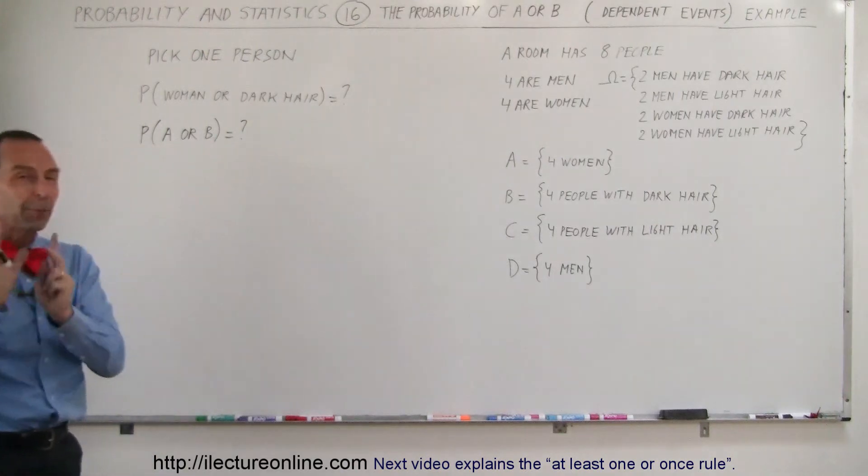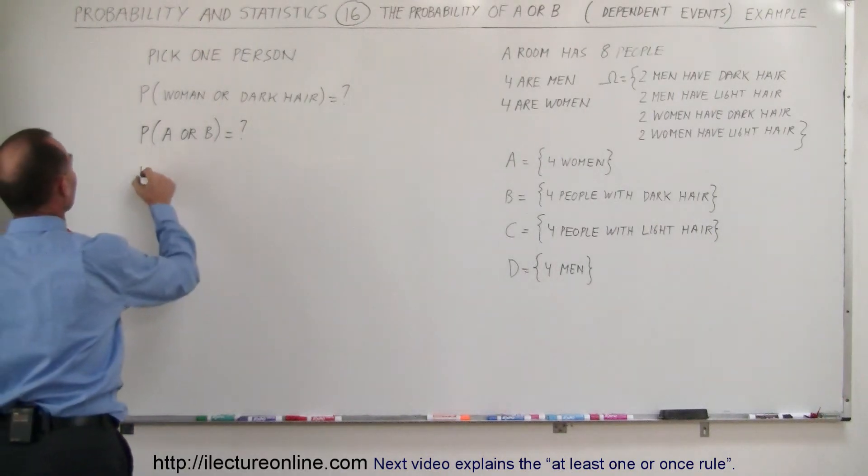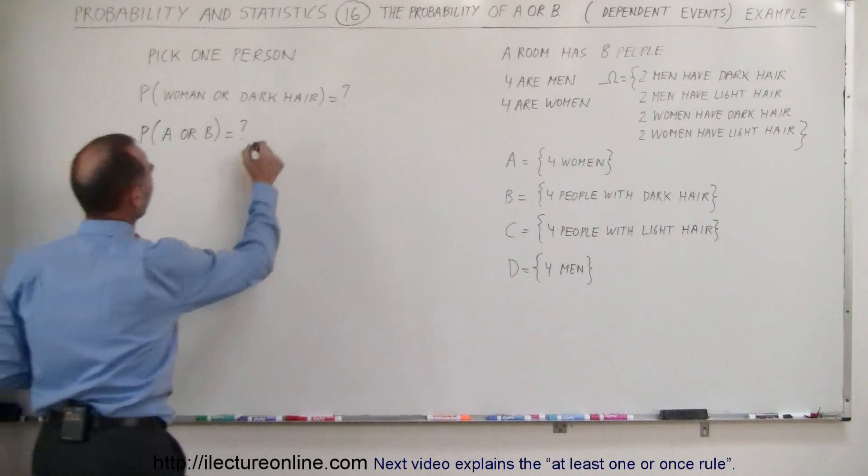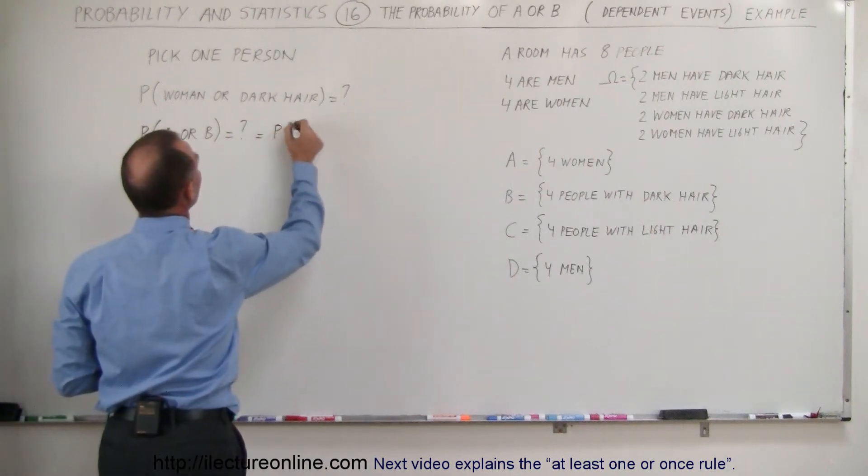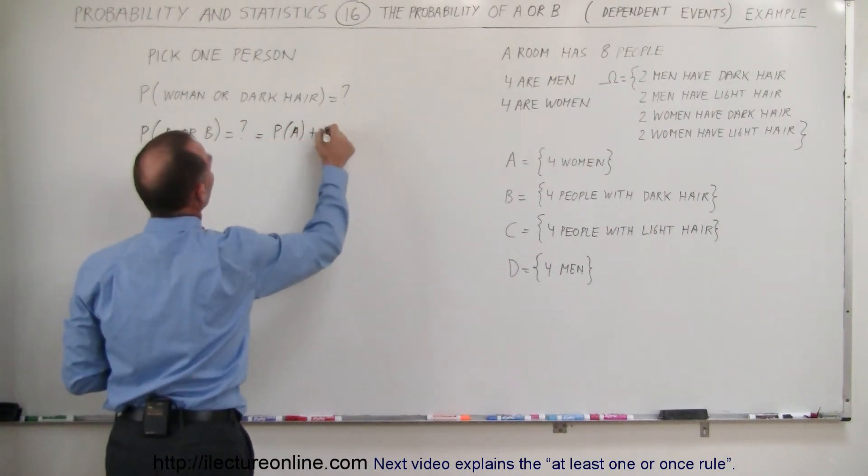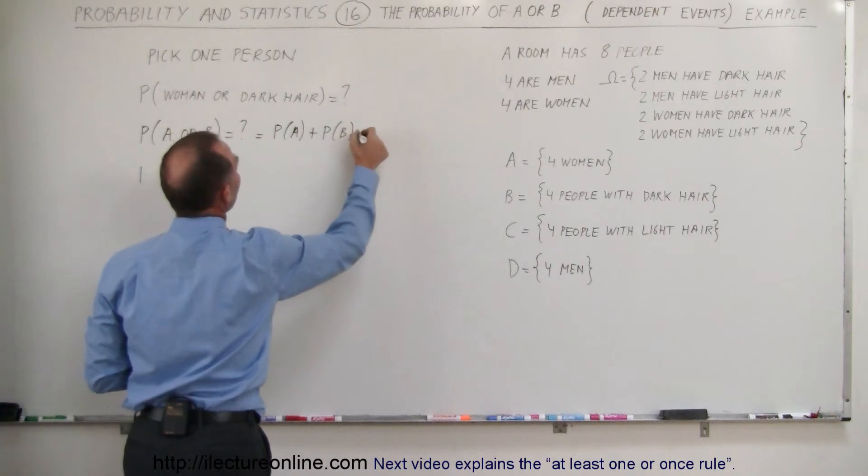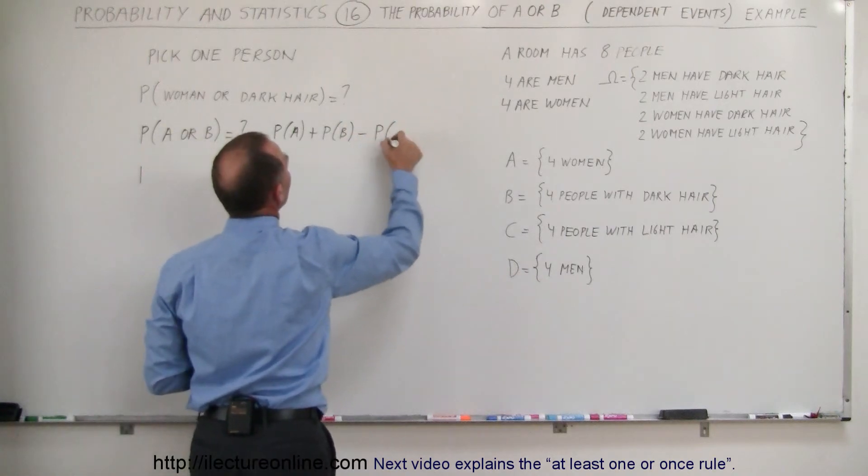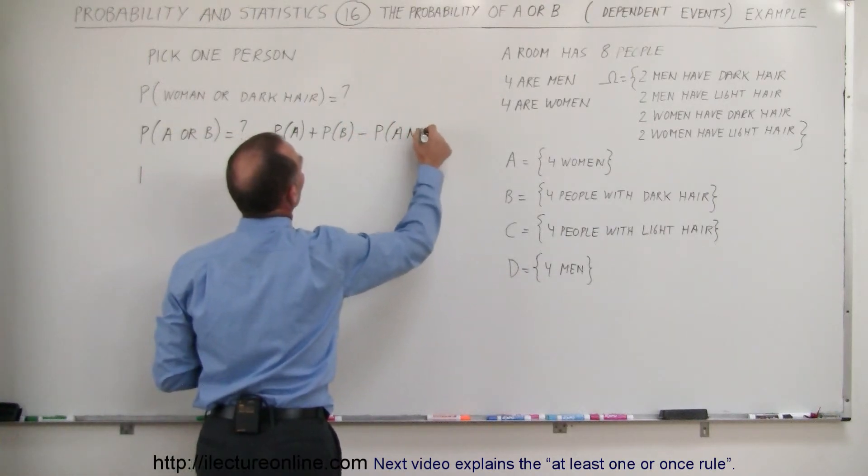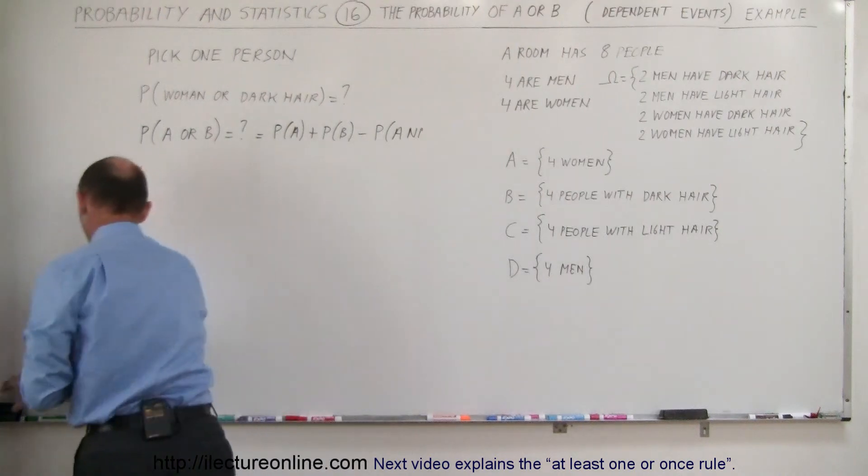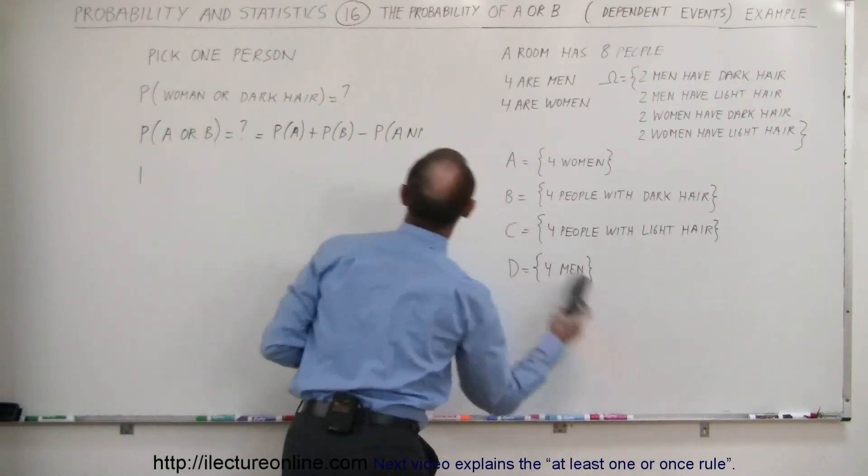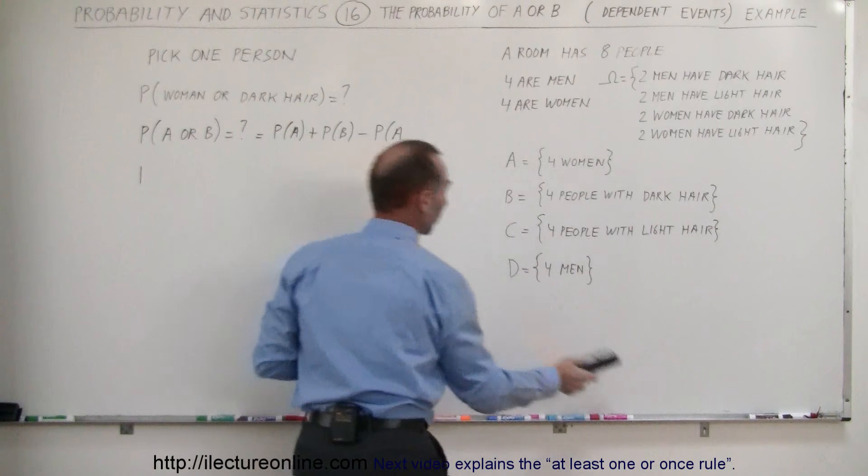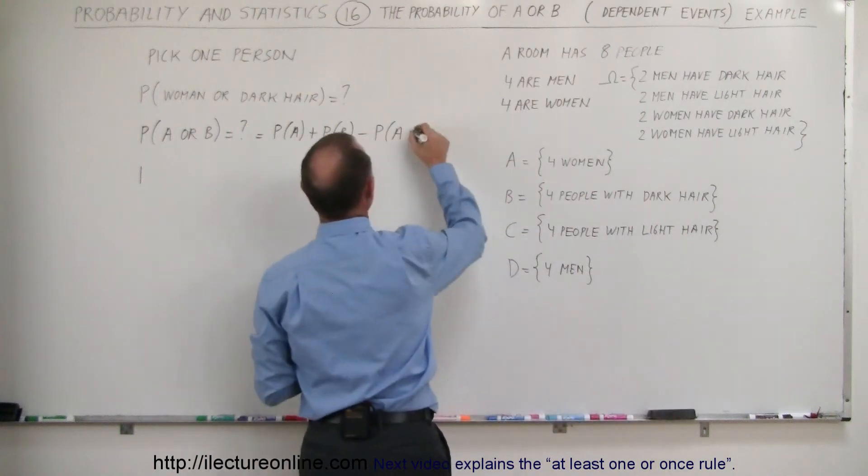And since it's overlapping, we know the equation. The equation says that will be equal to, I'll write it here, the probability that A will occur plus the probability that B will occur minus the probability A and B will occur, where they overlap. This is an overlapping or dependent situation.